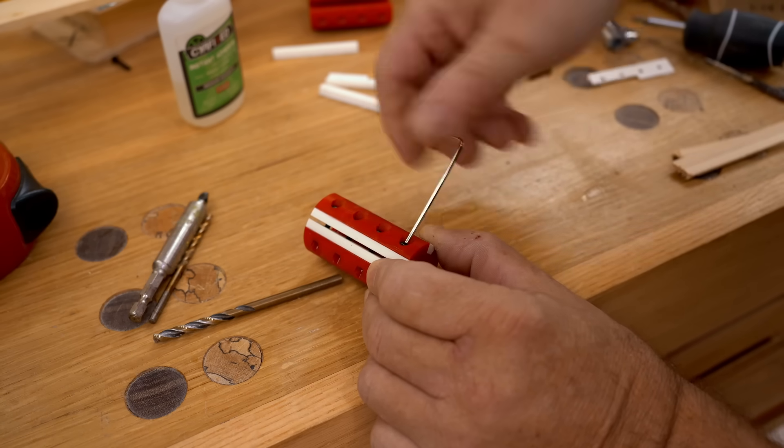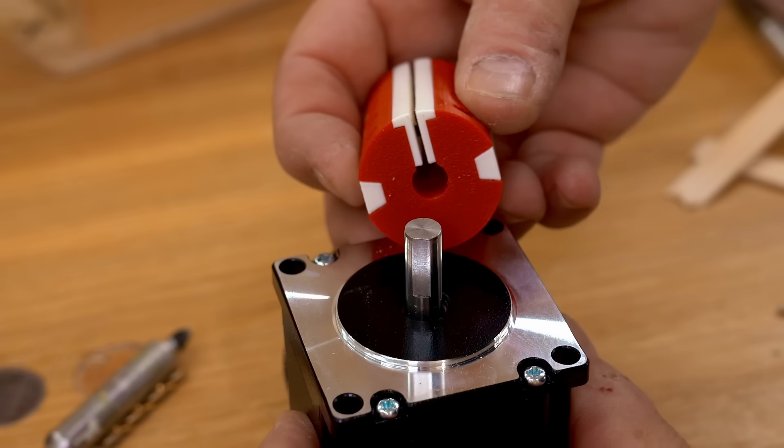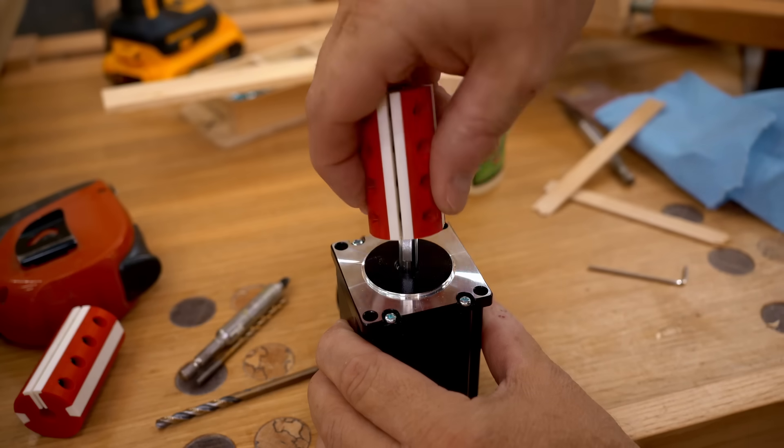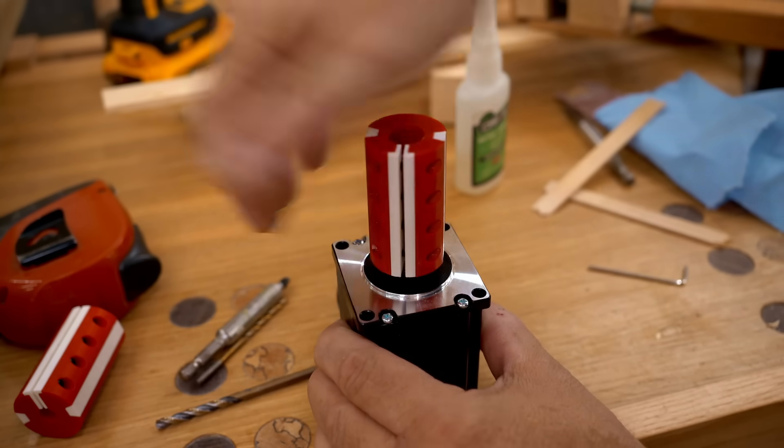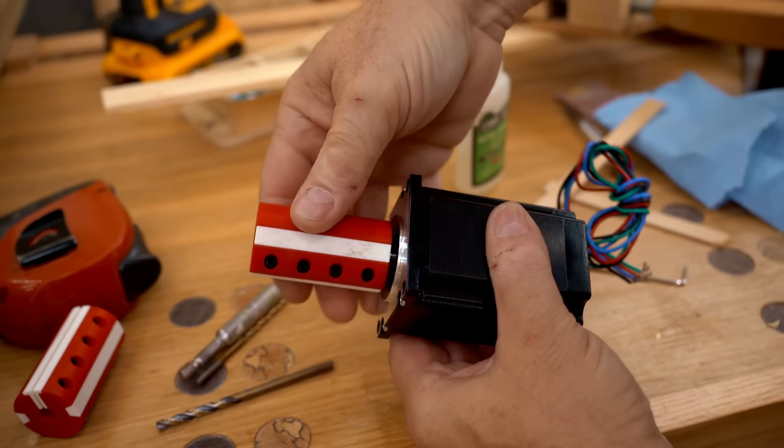I'm using super glue to glue those parts in place, and that makes for a very strong coupler that if I ever do have a problem with, I can always print a new one. Then I can get the screws put in and get it put on the motor. It's a nice snug fit, which is what you want.